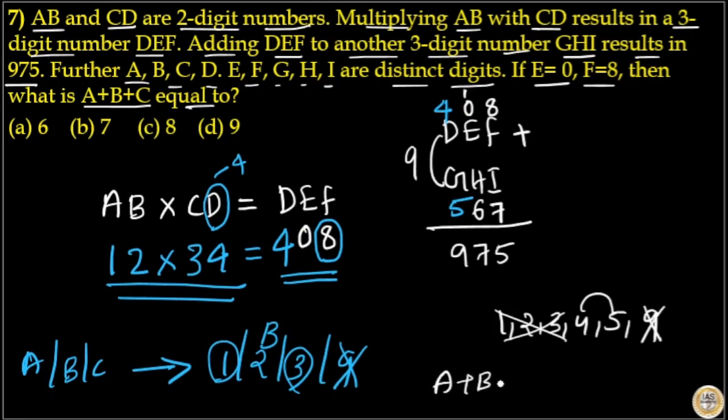Our answer is A plus B plus C. A is equal to one, B is equal to two, and C is equal to three, so A plus B plus C is equal to six.